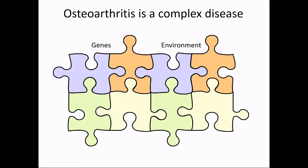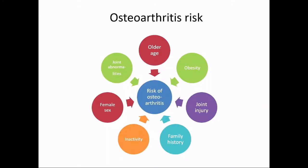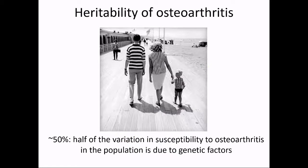We know it's a complex disease caused by a complex interplay between genes and the environment. The epidemiological risk factors for osteoarthritis have been very well documented in the literature and include older age, female sex, obesity, joint injury, family history of disease, inactivity, and joint abnormalities. The heritability of disease has been estimated to be about 50% — 60% for hip osteoarthritis and about 40% for osteoarthritis of the knee.